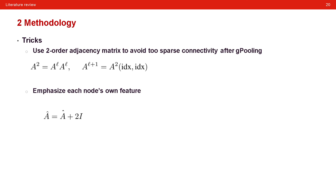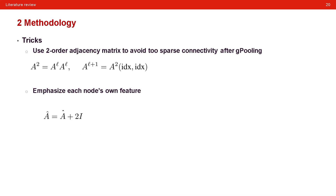They also suggest two tricks in the network structure. First, they use a second-order adjacency matrix to avoid sparse connectivity after graph pooling — specifically, they use A raised to the power of 2 to form the final adjacency matrix, so that even if first-order neighbors are eliminated after pooling, second-order connections still exist. Second, they emphasize each node's own feature by adding the original adjacency matrix with two times the identity matrix, so that the weight on each node's own feature is increased.